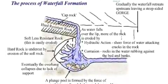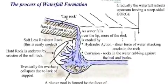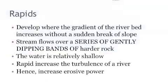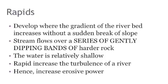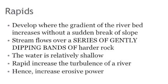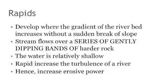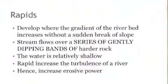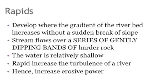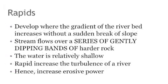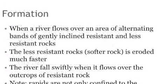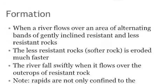The turbulent water erodes the depression intensively by abrasion, to further enlarge and deepen it. It develops where the gradient of the river bed increases without a sudden break of slope. The stream flows over a series of gently dipping bands of harder rock. The water is relatively shallow; however, there is a rapid increase in the turbulence of the river, and hence the river increases its erosive power.